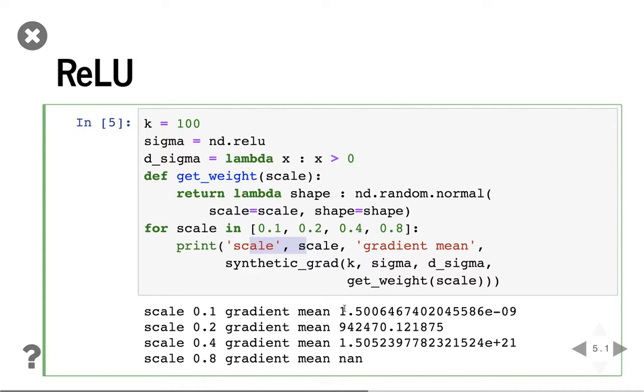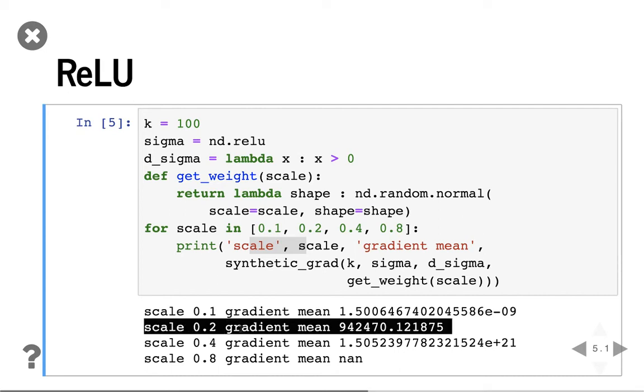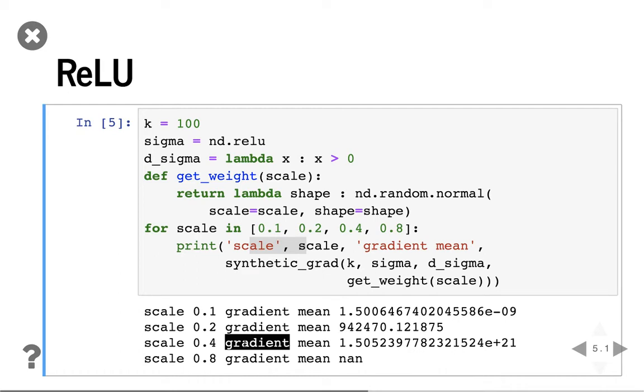And we can see the results. You can see that using a little bit small scale, the gradient mean is pretty small. It's 1e-9. And for 0.2, it's reasonable. It's a reasonable value. But if we double the scale again, it's pretty large gradients. It's 1e-20. And if we choose another again, then we get another number. So in this case, only 0.2 is a reasonable value. We can consider if we cannot be too small, we cannot be too large.